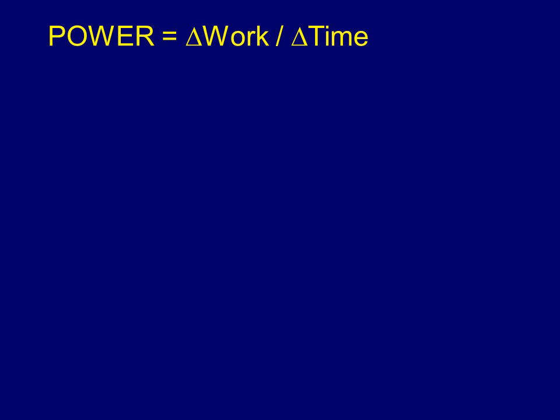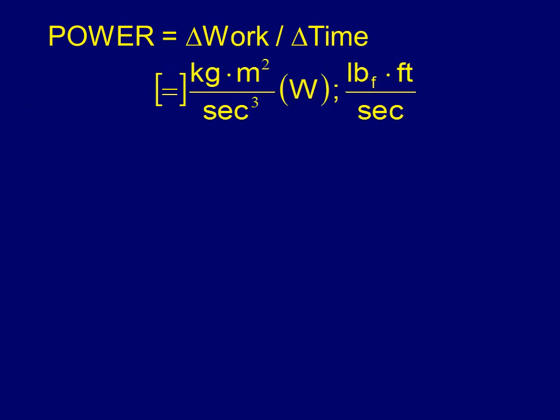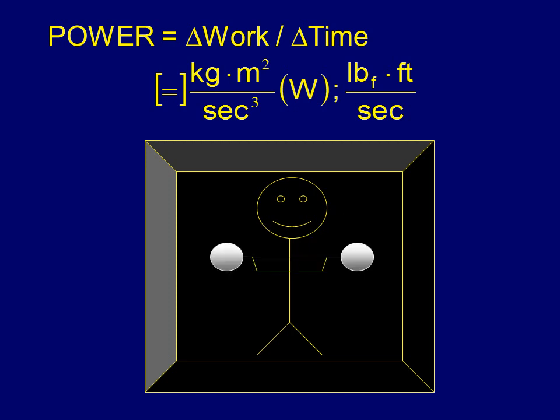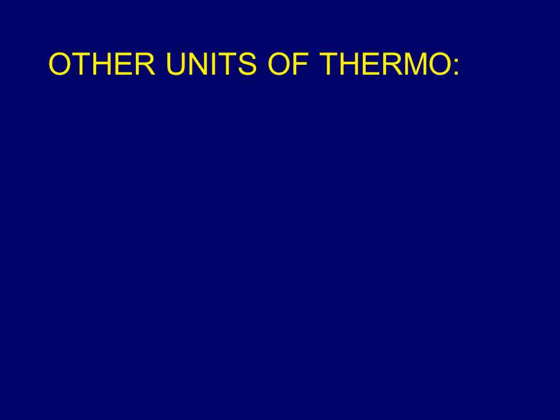Power is the work produced per time. We'd have kilogram meters squared per second squared per second — a joule per second is a watt. In the English system we'll have foot-pounds per second. Power is how much work you do per time.